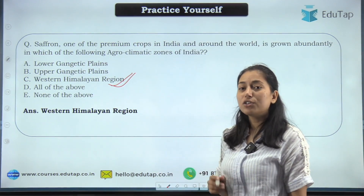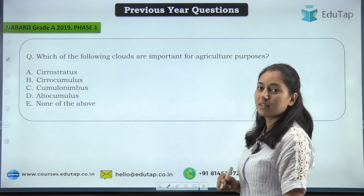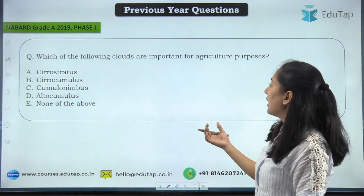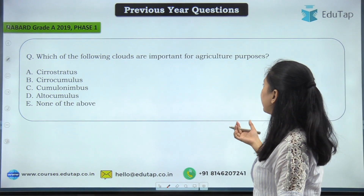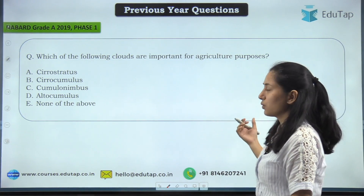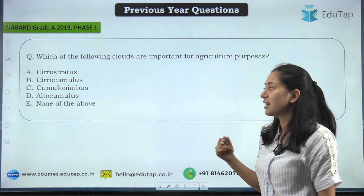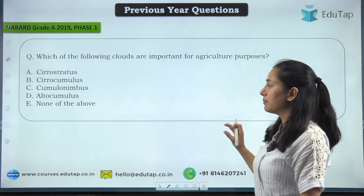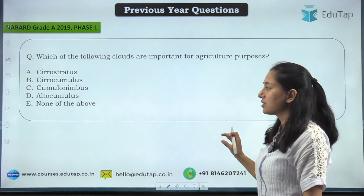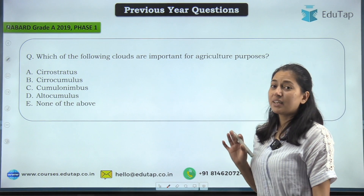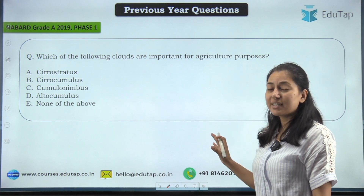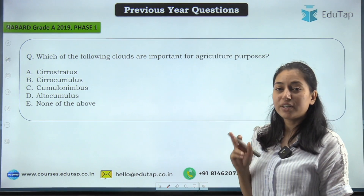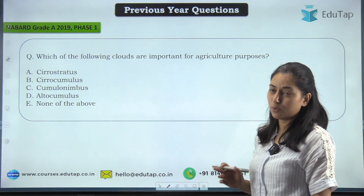Now moving on to today's question: which of the following clouds are important for agricultural purposes? Options are cirrostratus, cirrocumulus, cumulonimbus, altocumulus, none of the above. Before answering this question, we will discuss what clouds are and what the types of clouds are.